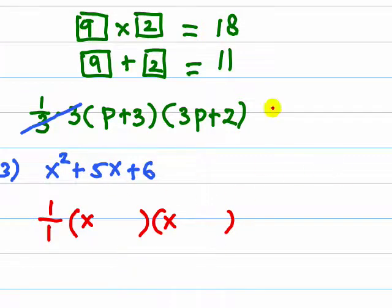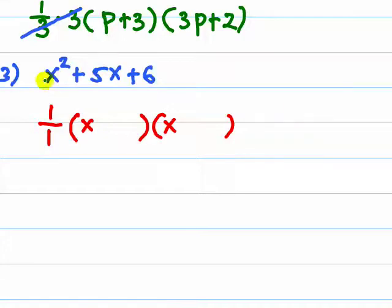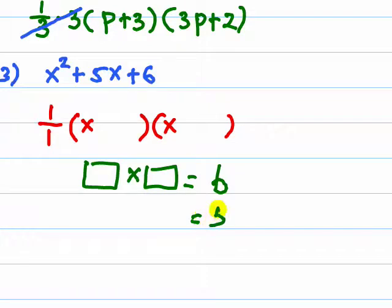And then we are looking for 2 numbers so that the product is the same as the product of this coefficient with 6, which is 6. So we want 2 numbers so that if we multiply, we get 6 and if we add, we have 5.